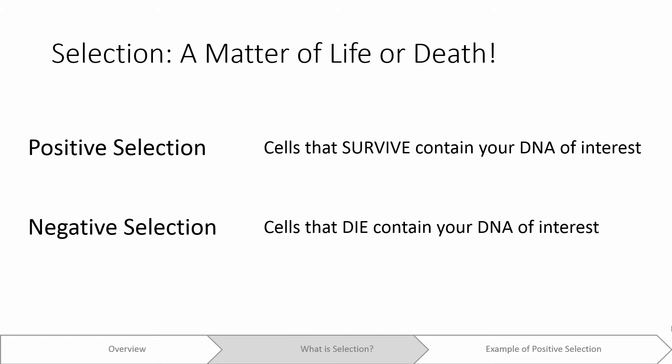Selection can be broken down into two types, positive selection and negative selection. Positive selection permits the growth of cells that have successfully taken up your DNA of interest, while negative selection kills them.